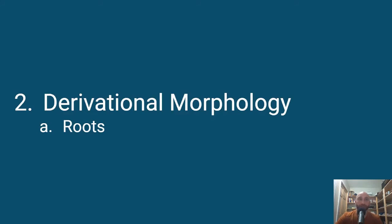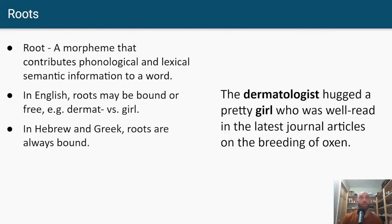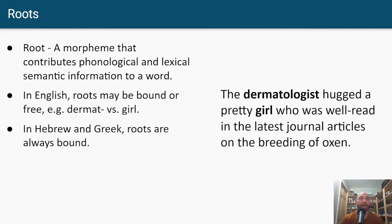In derivational morphology, one of the big things is roots — the best place to start because roots carry the lexical information of a word. A root is a morpheme that contributes phonological and lexical semantic information to a word. The study of roots has really taken off in linguistics, and a lot of it has come from Semitic languages, especially Hebrew, because it's a well-studied language. Hebrew has a root that is very obvious — three consonants, three letters written. You can see the root very clearly. What people have said is that all languages have roots, though their morphological systems may do different things with roots.